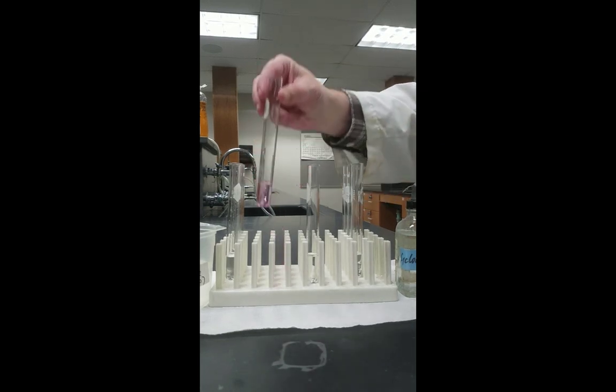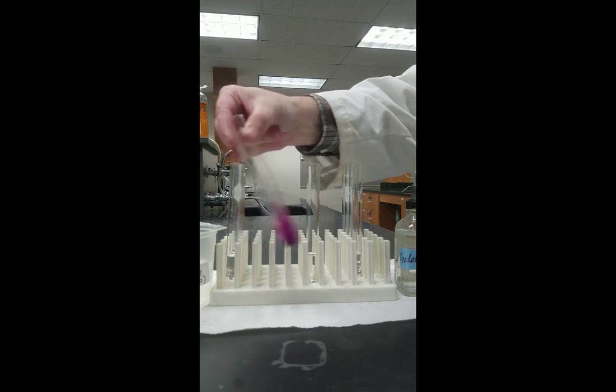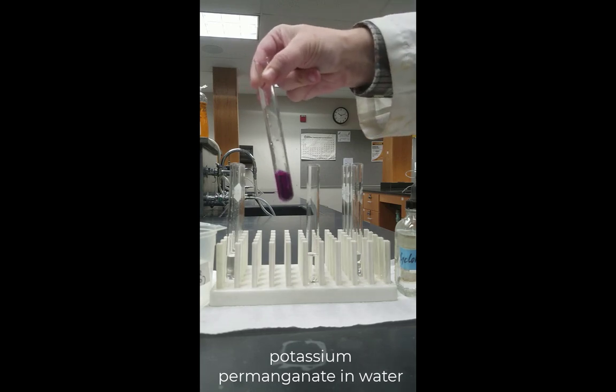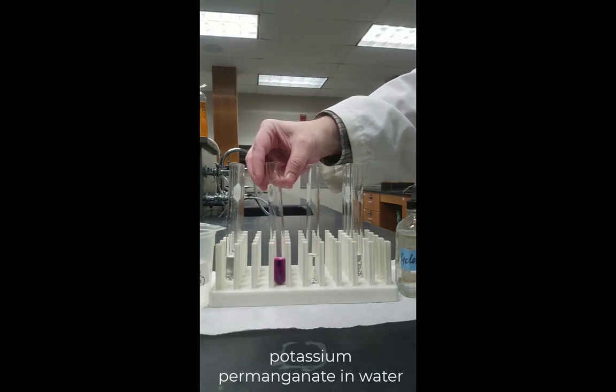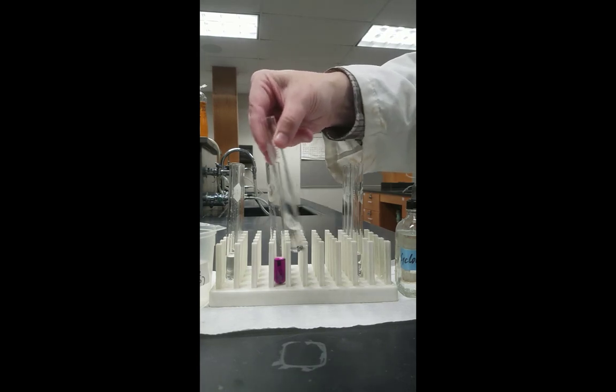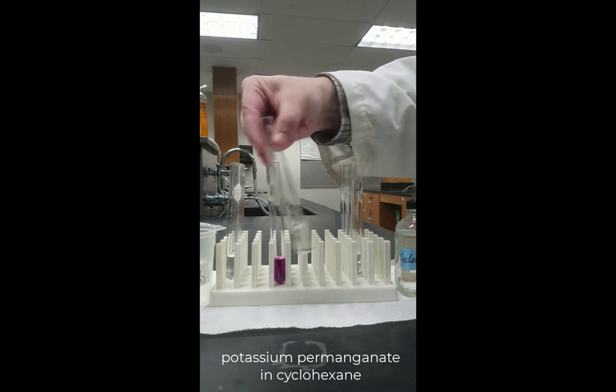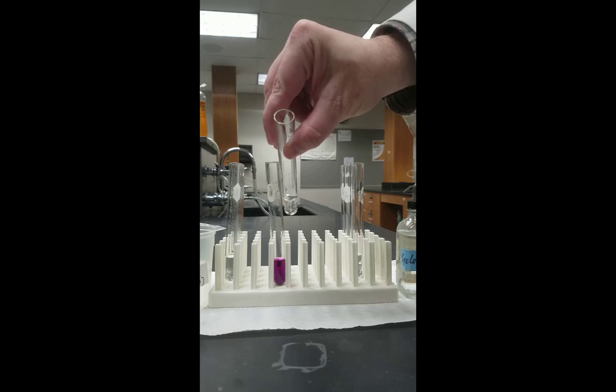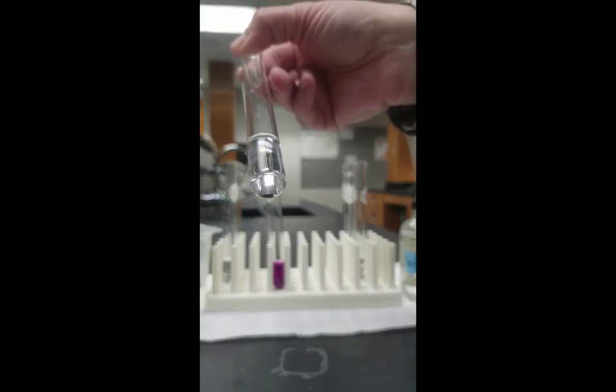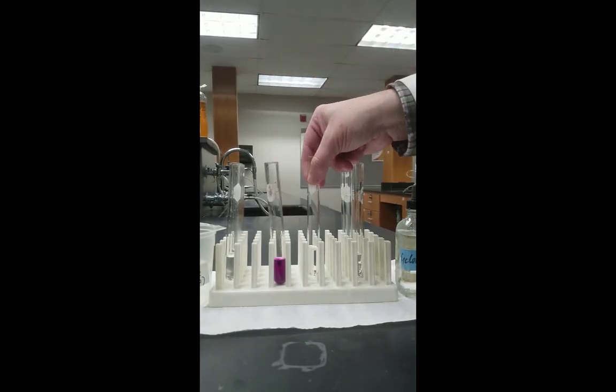Next, we're going to go ahead and shake each of the test tubes. So you'll notice that the water immediately takes on a very deep purple color, just like the solid itself. However, when we shake the test tube containing cyclohexane, no real change is observed. If we go ahead and we look at the bottom of the test tube, you'll notice that in fact, the solid potassium permanganate is still left in the bottom of the test tube.